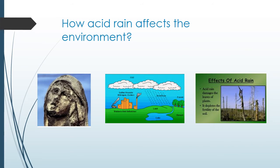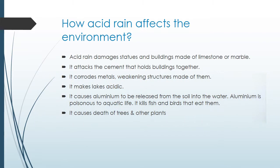Now I will describe how acid rain affects the environment. Acid rain damages statues and buildings made of limestone or marble. It attacks the cement that holds buildings together. It also corrodes metals, weakening structures made of them.